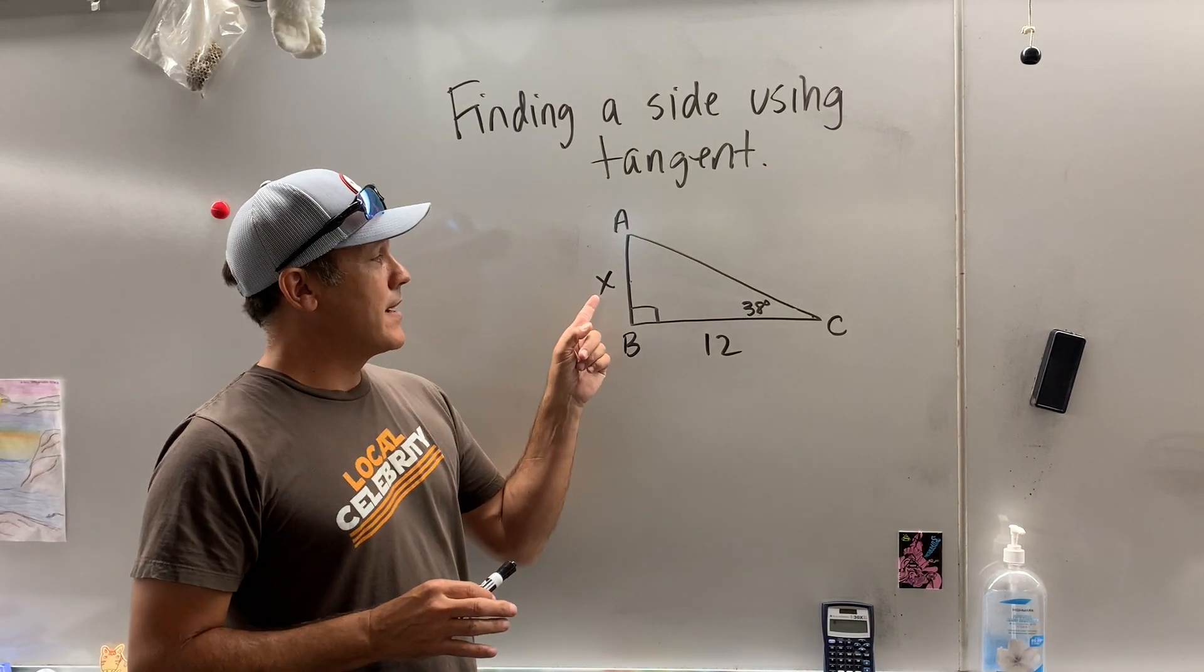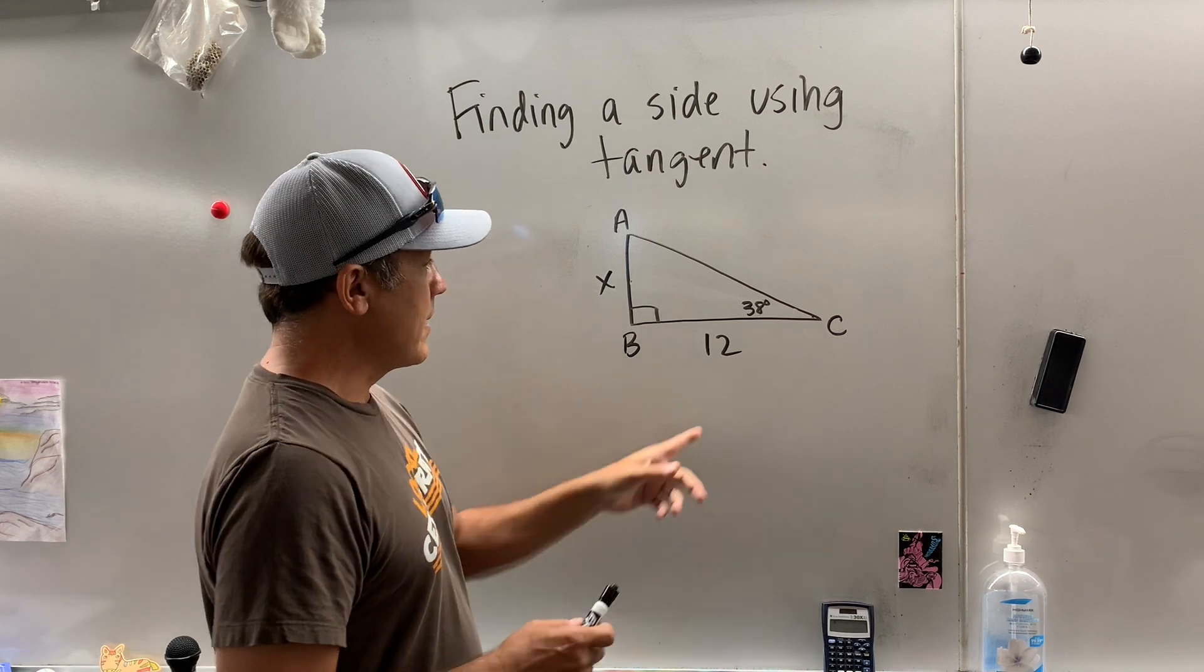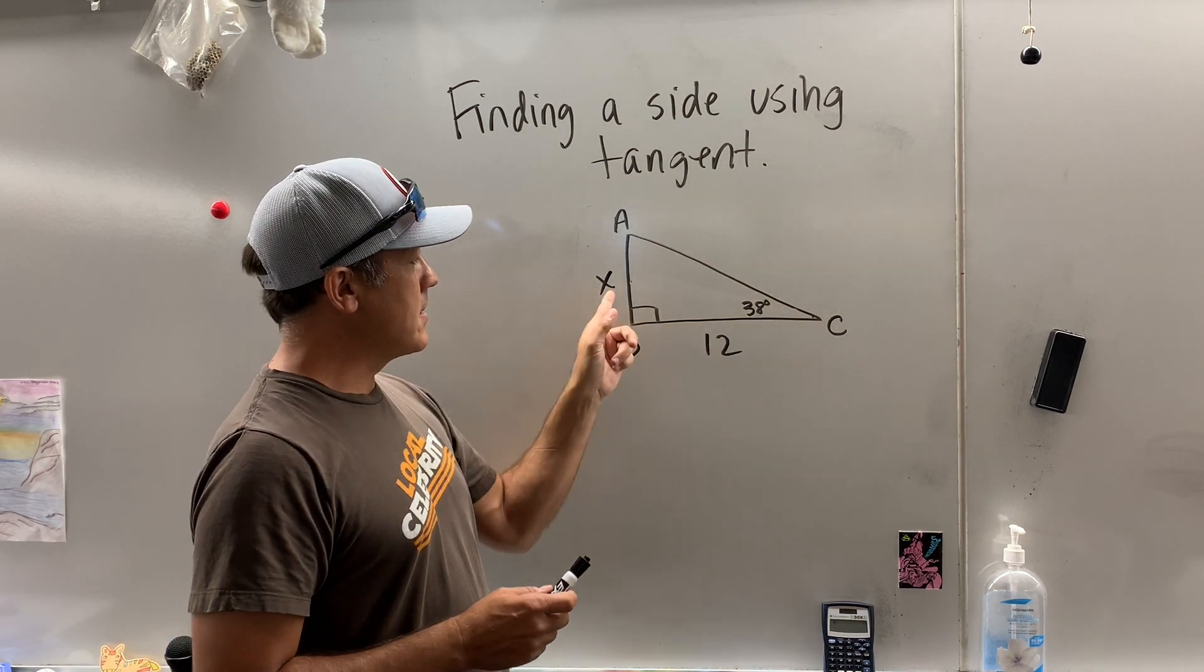All right, today we're going to learn how to find a missing side using tangent. So here's the angle I know, and this is the side we want to know.